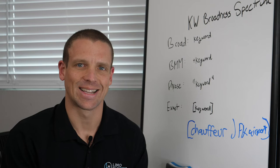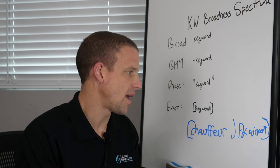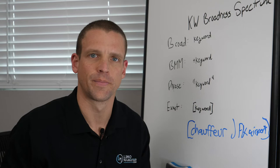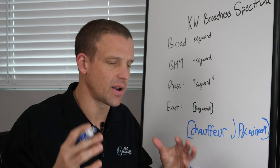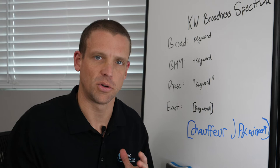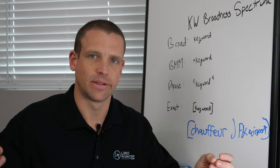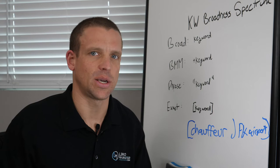You notice there are brackets around it. So what we call that is an exact match keyword. Essentially what you're telling Google is: whenever someone searches this exact query — chauffeur, JFK airport — show one of my ads. That's fundamentally how Google Ads and Bing Ads work. You have keywords in your account and then you have ads that match those keywords. It's called an ad group.